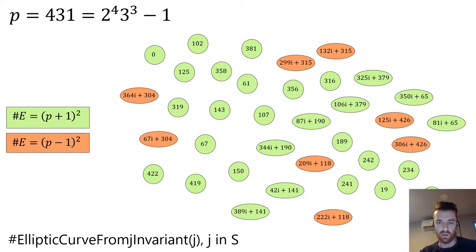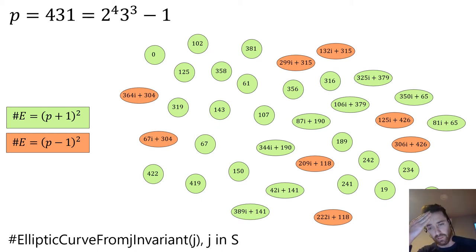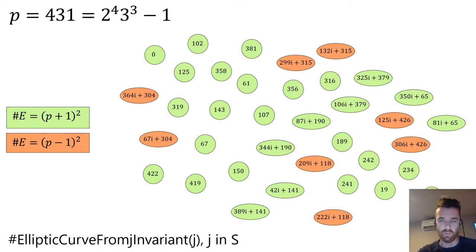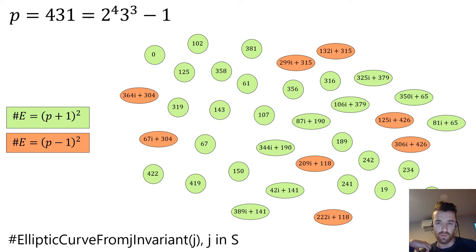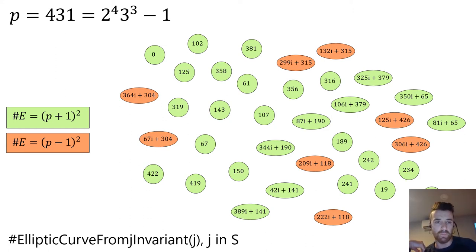But for some of the nodes in the graph, I wasn't able to find points of order 2 and points of order 3 over F_{p²}, which for a while confused me — all of these curves are isogenous, which means they should have the same number of points. When I started computing the group orders of the representative curves output by Magma's elliptic curve from j-invariant function, I started to see that there were two different group orders being produced.